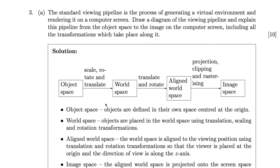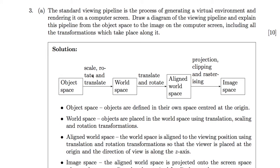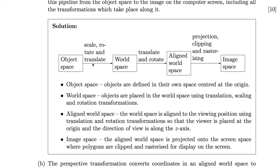Question 3: the standard view and pipeline for generating a virtual environment. Drawing a diagram — this is the basic diagram; any less than this and you would lose marks. We start at the object space. This is where objects are defined in their own space, usually centred at the origin. The reason for centring at the origin is we can apply scale, rotation, and translation operations to copy, move, scale, and rotate them to build our world.